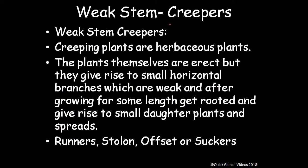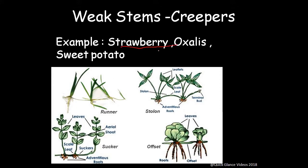The second form of weak stem is creepers. Creeper plants are herbaceous plants that themselves are erect but give rise to small horizontal branches which are weak. After going some length they get rooted and give rise to small daughter plants. We have already seen runners, stolons, offsets, and suckers — these are creepers. Examples include strawberry, Oxalis, and sweet potato.